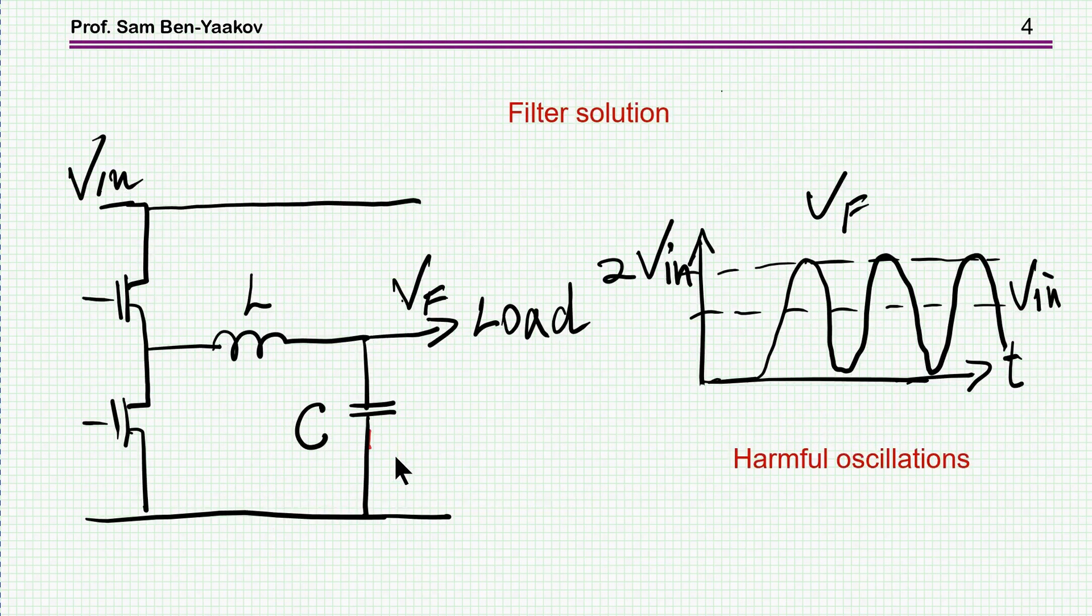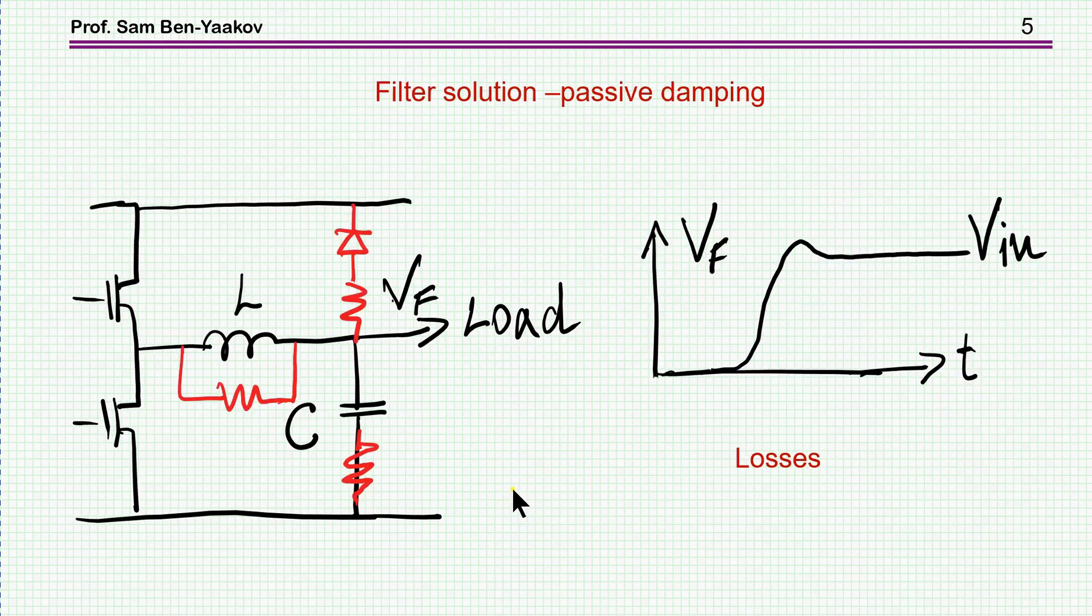There are some other methods to achieve a slow dV/dt. One of them is using an LC filter. Unfortunately, the LC filter for a power system would have a high Q, because if the Q is high, the quality factor is high, then this is what we are going to see at the output of this filter. It's going to oscillate and eventually going to damp out, but damping requires passive resistances in the circuit.